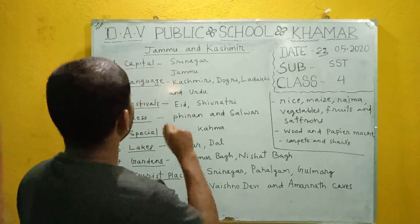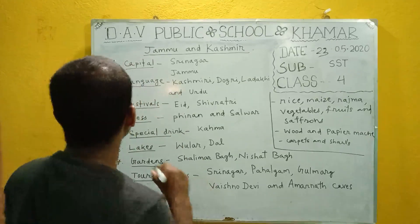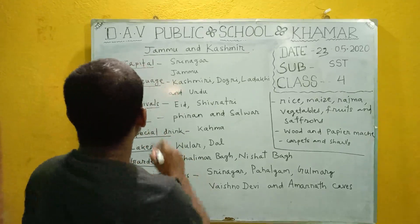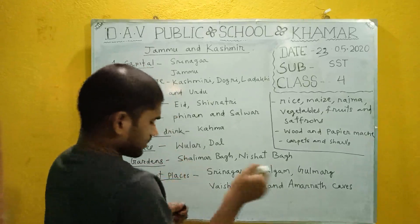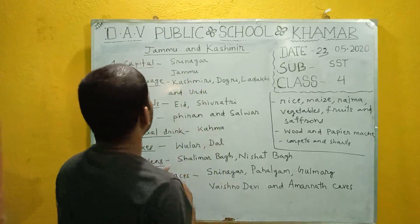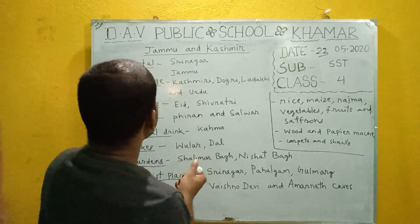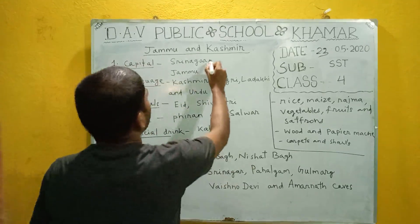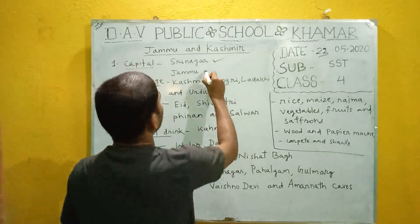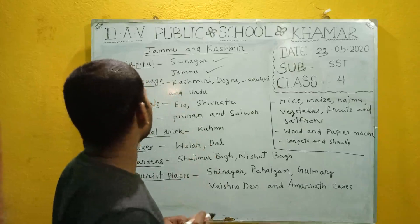Let us know in greater detail about Jammu and Kashmir. First, the capital: there are two capitals — Srinagar and Jammu. Srinagar is the summer capital and Jammu is the winter capital of Jammu and Kashmir.